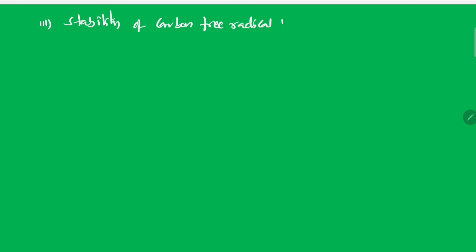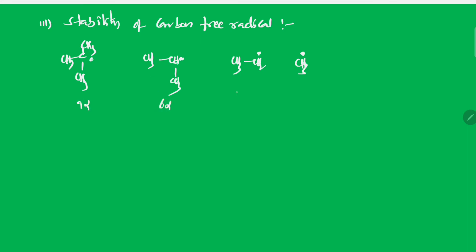Stability of carbon free radical is also explained by hyperconjugation. Tertiary carbon free radical contains nine alpha hydrogens, secondary contains six, primary contains three, and methyl carbon free radical has no alpha hydrogen.